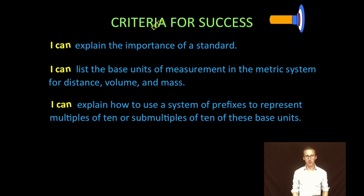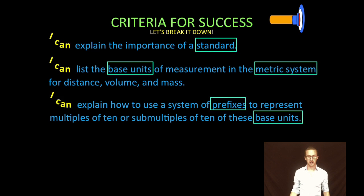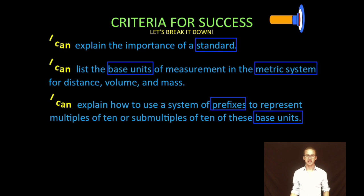Let's break it down a little bit. In this video, we're going to talk about the importance of a standard and how standards are really important when it comes to getting accurate measurements. Then we're going to list the base units of measurement in the metric system for distance, volume, and mass. Finally, we're going to explain how to use a system of prefixes to represent multiples of 10 or submultiples of 10 of those base units.